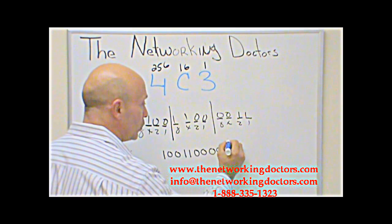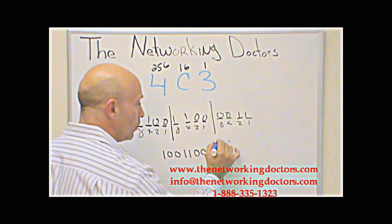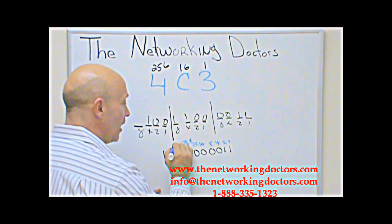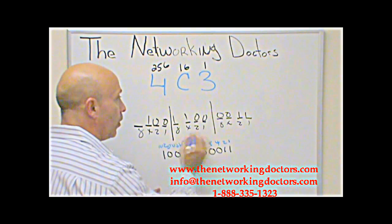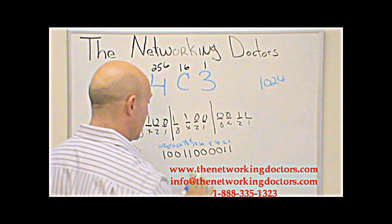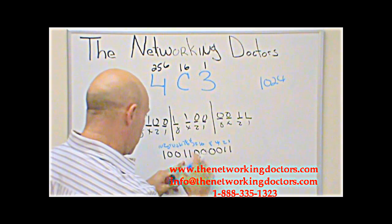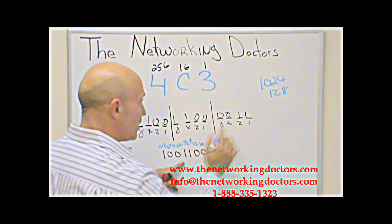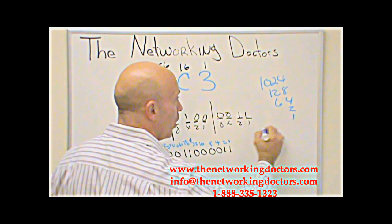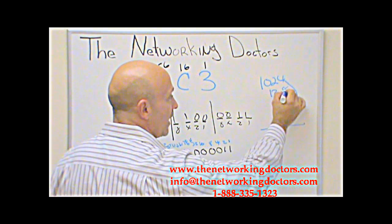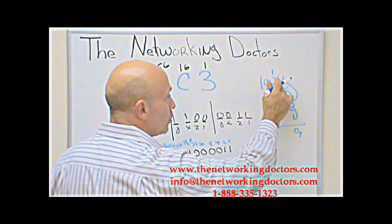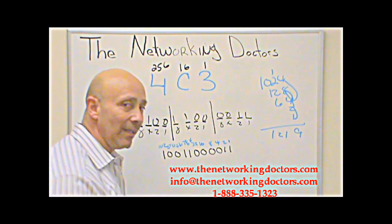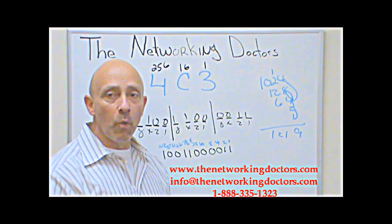Let's put all the bit values: 1, 2, 4, 8, 16, 32, 64, 128, 256, 512, 1024. We take 1024, plus 128, plus 64, plus 2 and 1. Adding up: 4 and 4 is 8, and 8 is 16 — then 18, 19. 1 and 2 is 3, 3 and 2 is 5, 5 and 6 is 11. The total is 1219. No calculator, no problem.